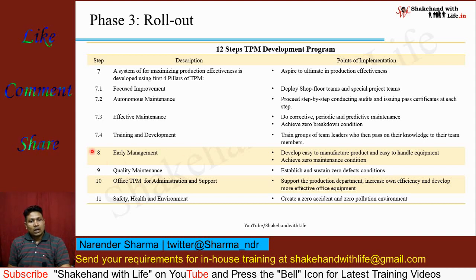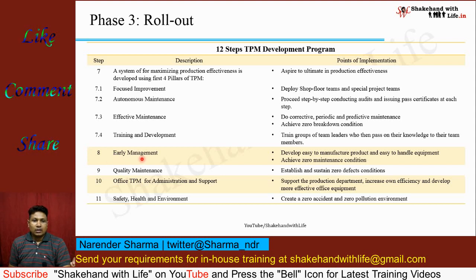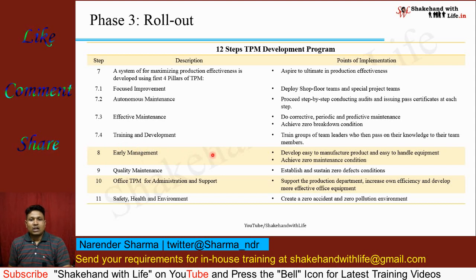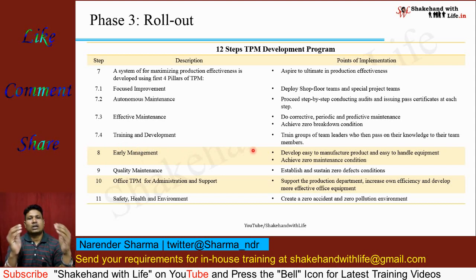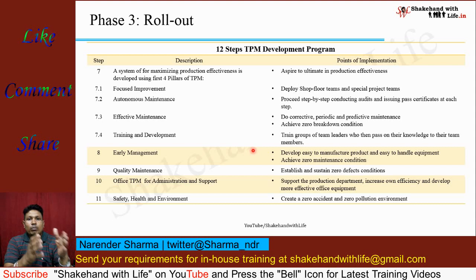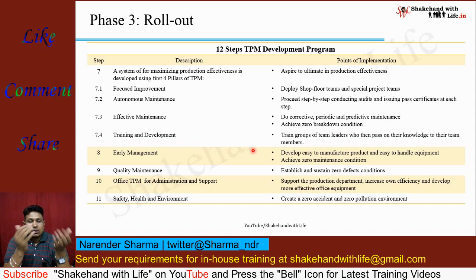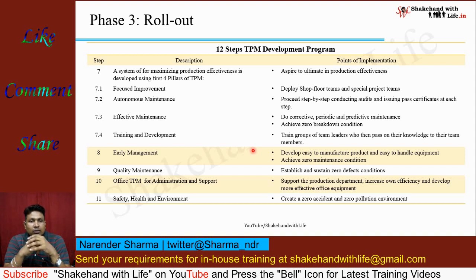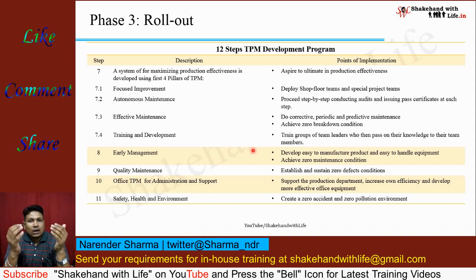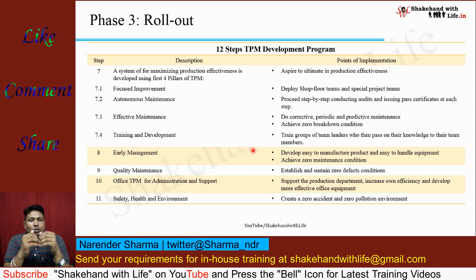In the eighth step, the fifth pillar is early management. Early management starts right from the design of the equipment and the design of the manufacturing process through which the product is going to be manufactured. The goal is to develop easy-to-manufacture products and easy-to-handle equipment, and to try to achieve zero maintenance condition — meaning no maintenance is required for a machine.